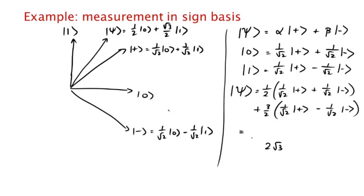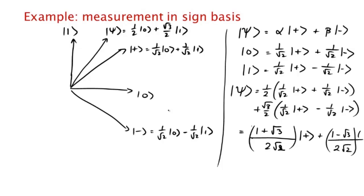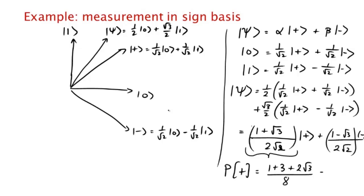Gathering terms, for the |+⟩ component we get (1 + √3)/(2√2), and for the |−⟩ component we get (1 − √3)/(2√2). So if we figure out the probability of seeing |+⟩, we just take the square of the |+⟩ amplitude, which is (1 + 3 + 2√3)/8 = (2 + √3)/4 — exactly what we saw from the previous calculation.